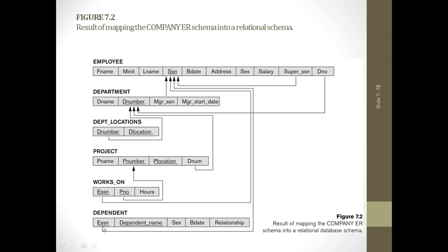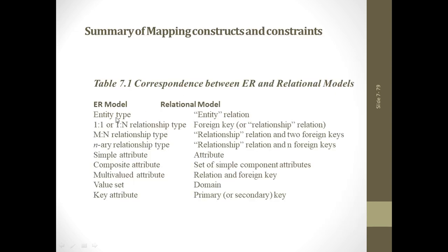The dependent table includes employee SSN — because the strong entity is employee, as shown by the arrow referencing employee SSN — and dependent name as the partial key, along with all other attributes. Basically: an entity type becomes a relation; one-to-one or one-to-many can be shown using a foreign key; many-to-many forms a new relation with two foreign keys; an n-ary relation forms a new relation with n foreign keys.